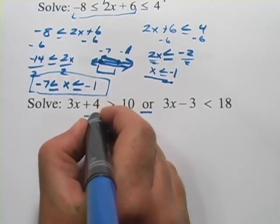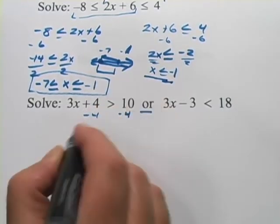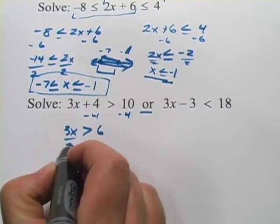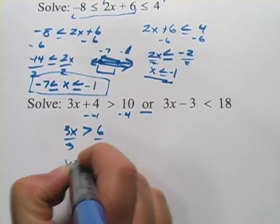First one, I'm going to subtract 4 from both sides, I get 3x is greater than 6, we divide by 3, we get x is greater than 2.